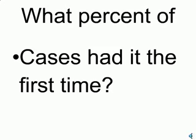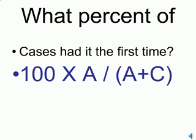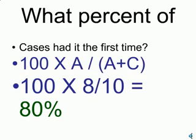What percent of the cases had the characteristic the first time? 100 times a divided by a plus c should give us the answer, about 80%.